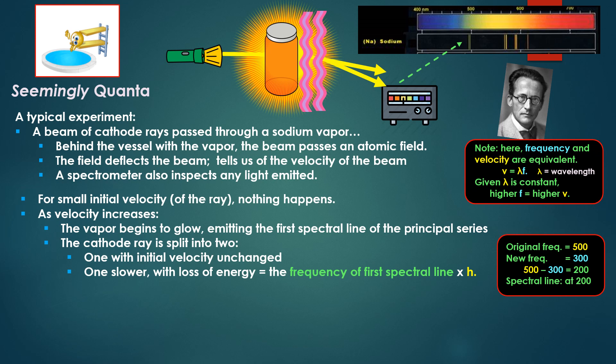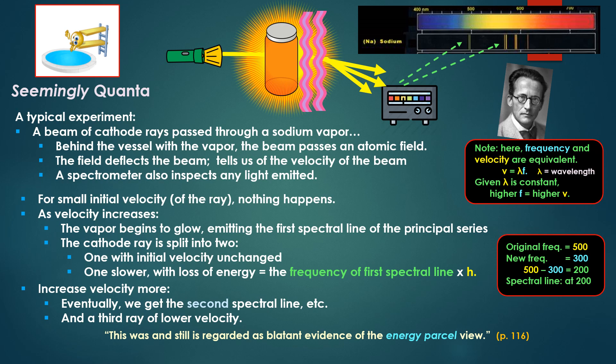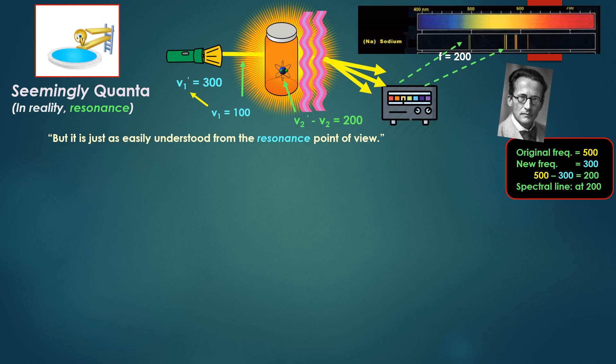You might have an original frequency of 500, a new frequency of 300, and we're going to get a spectral line at 200. Increase the velocity more of that beam, eventually we'll get a second spectral line, and a third ray of lower velocity. This was and still is regarded as blatant evidence of the energy parcel view, of transferring energy parcels. But it was just as easily understood from the resonance point of view.